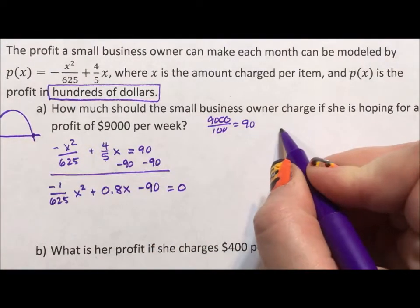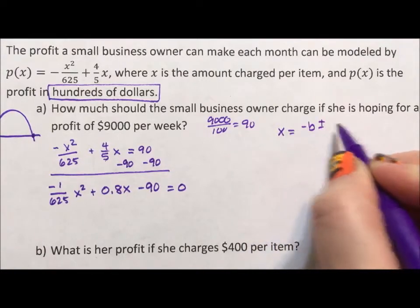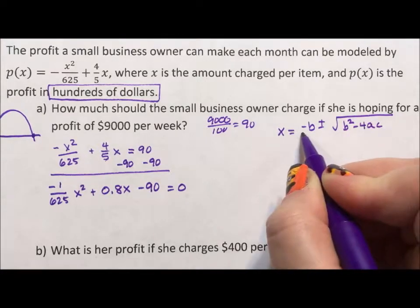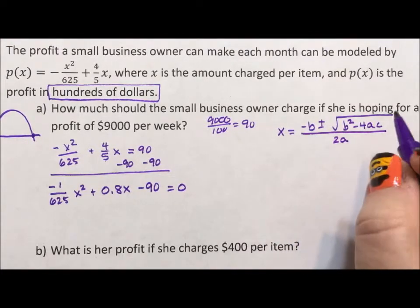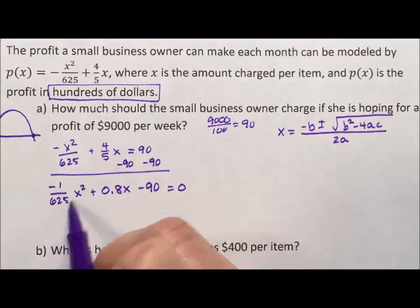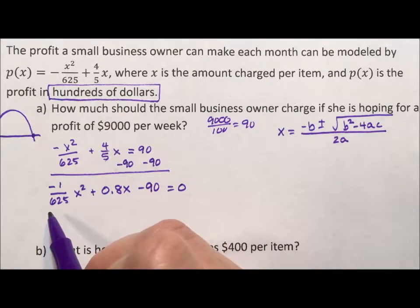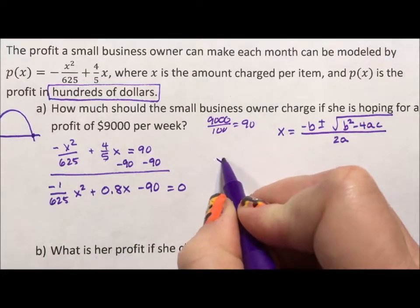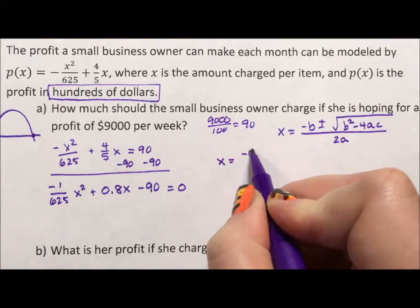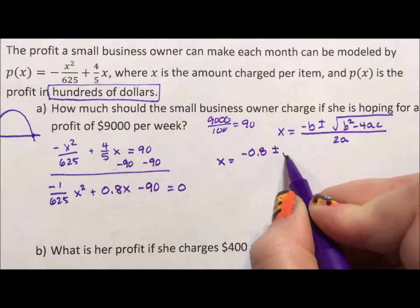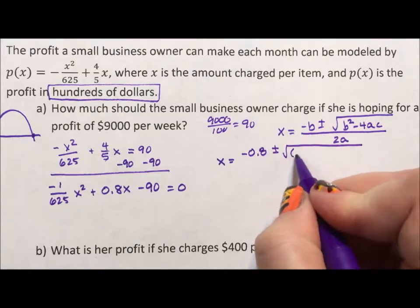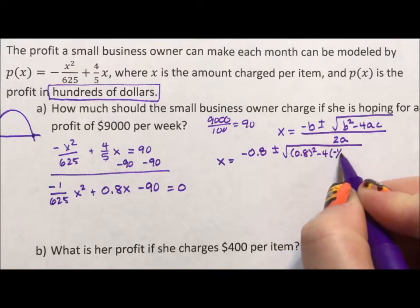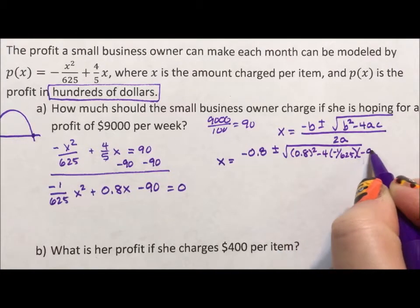The quadratic formula says x equals negative b plus or minus the square root of b squared minus 4ac, all over 2a. We're using the quadratic formula because a is a fraction and while it might be factorable, this will be faster. So x equals negative 0.8 plus or minus the square root of 0.8 squared minus 4 times negative one over 625 times negative 90.